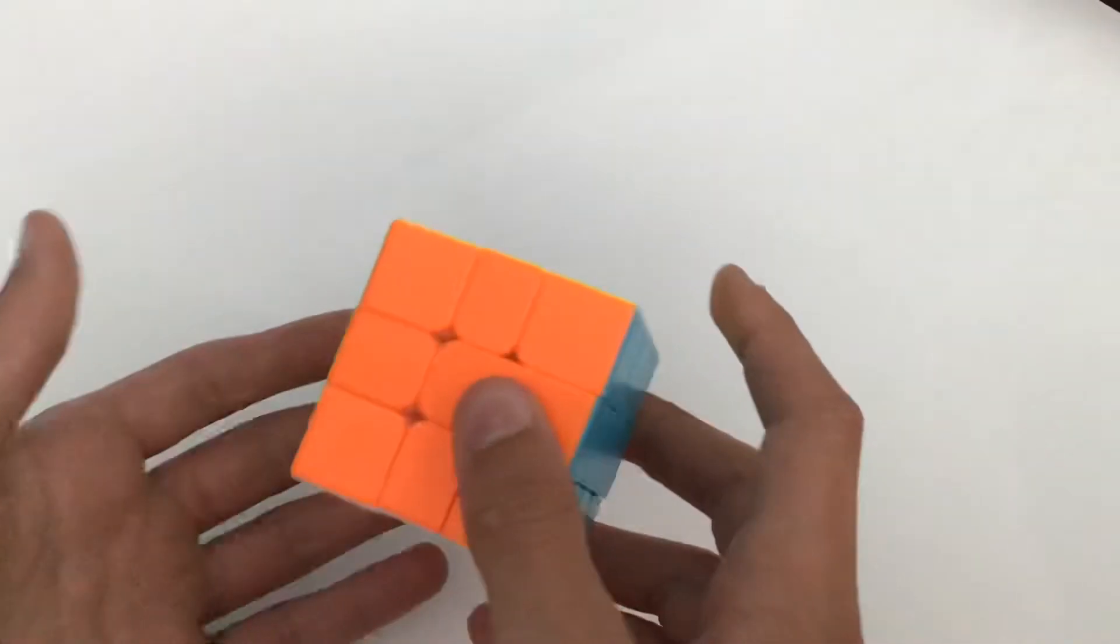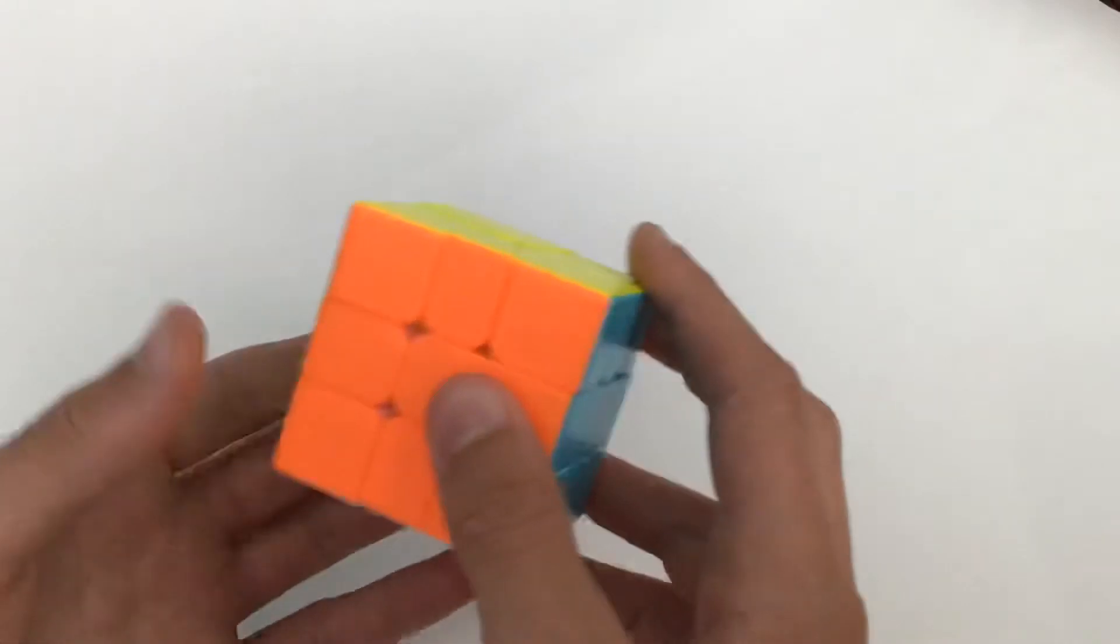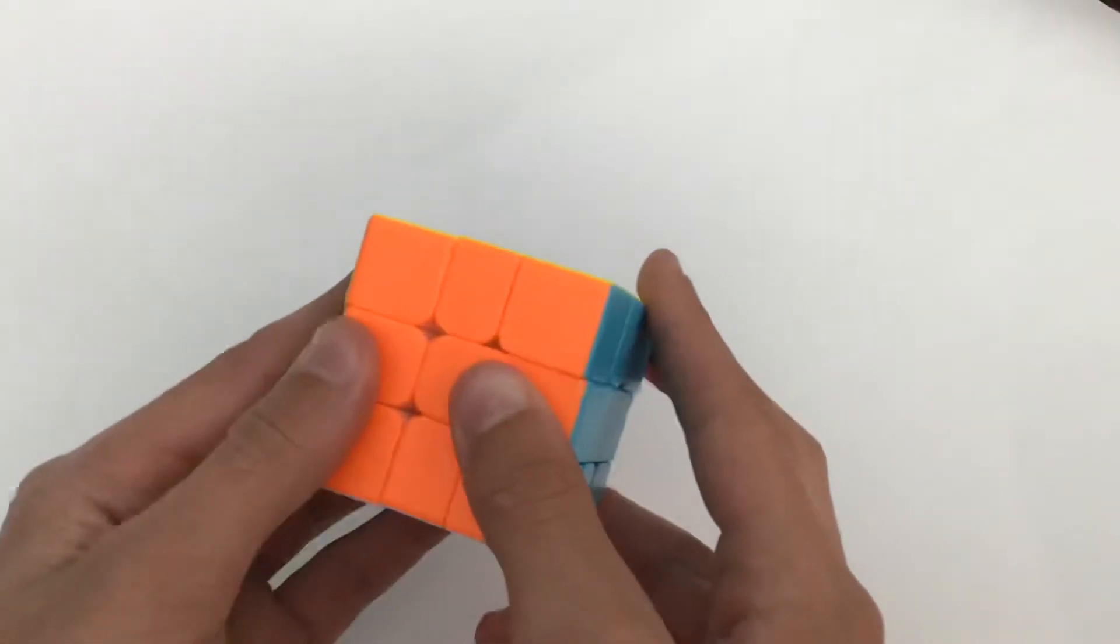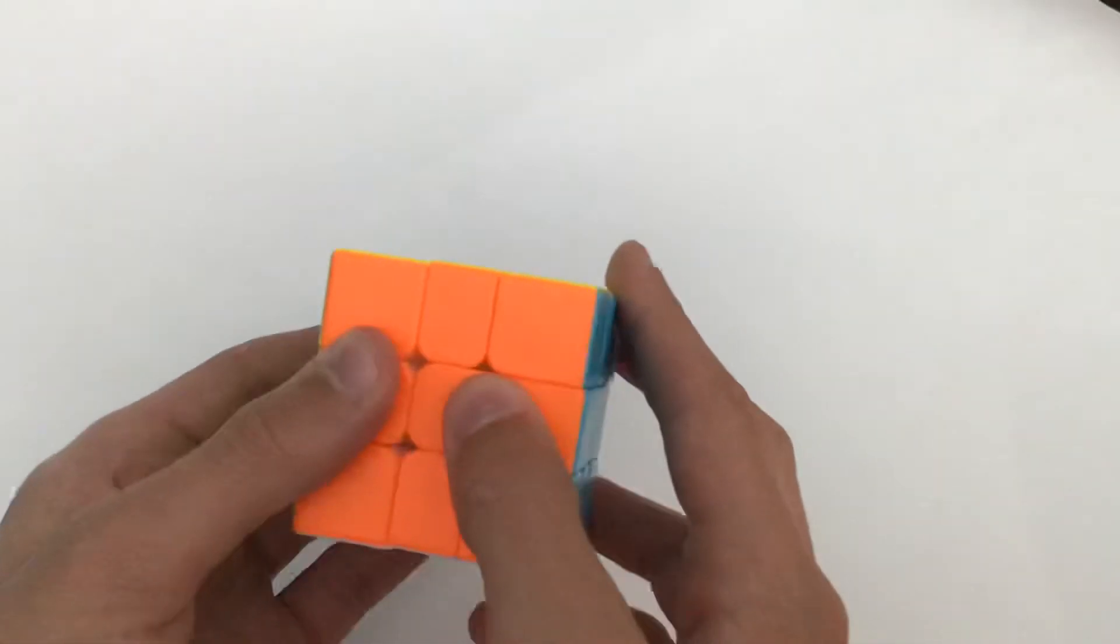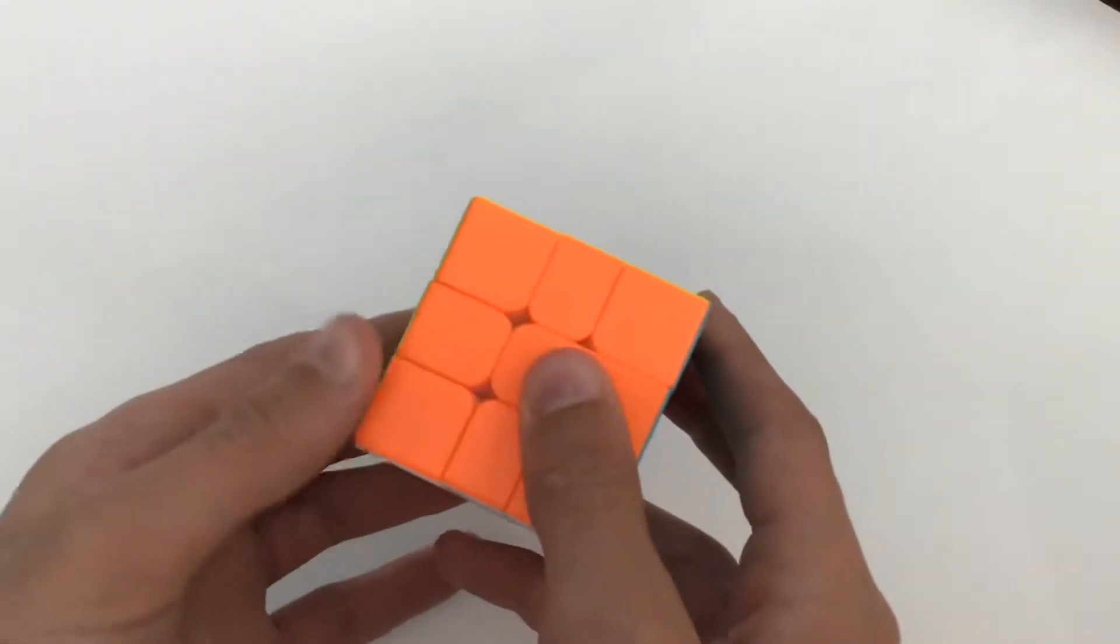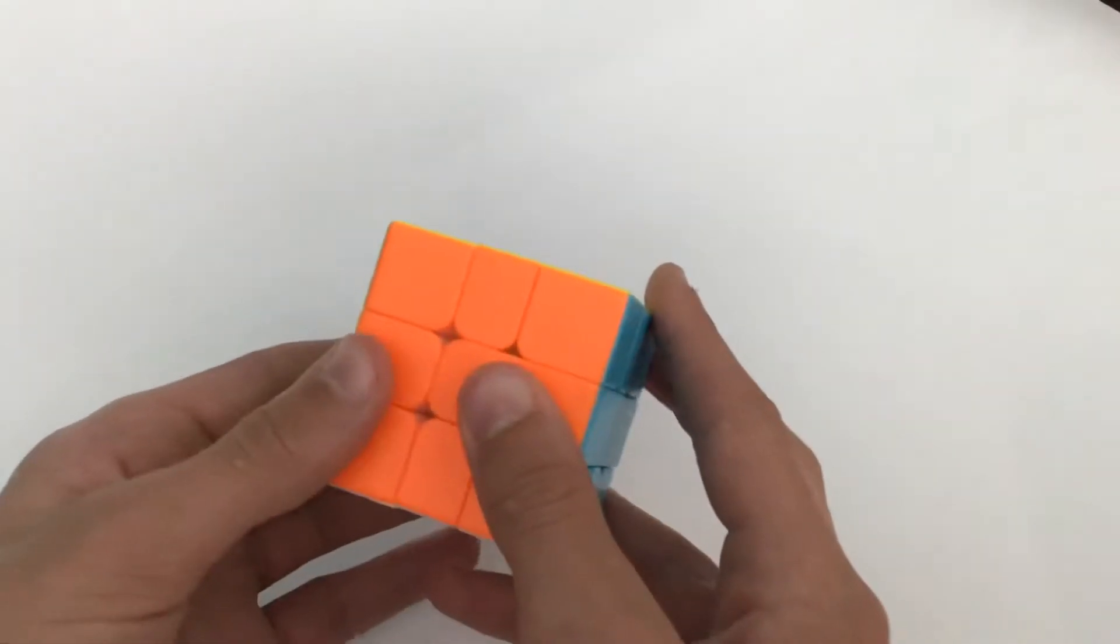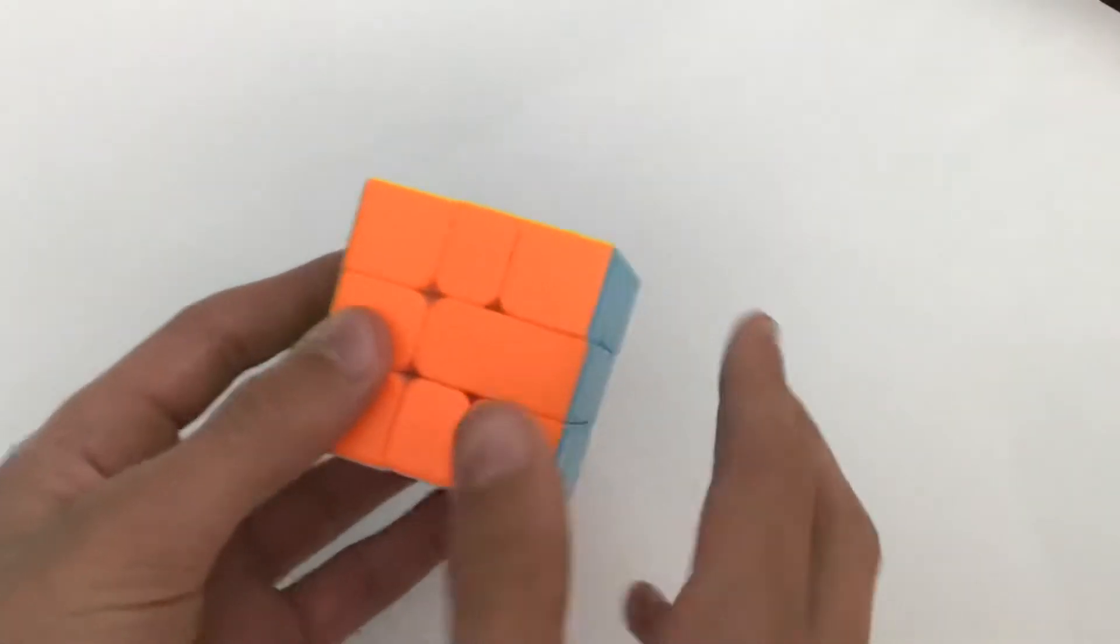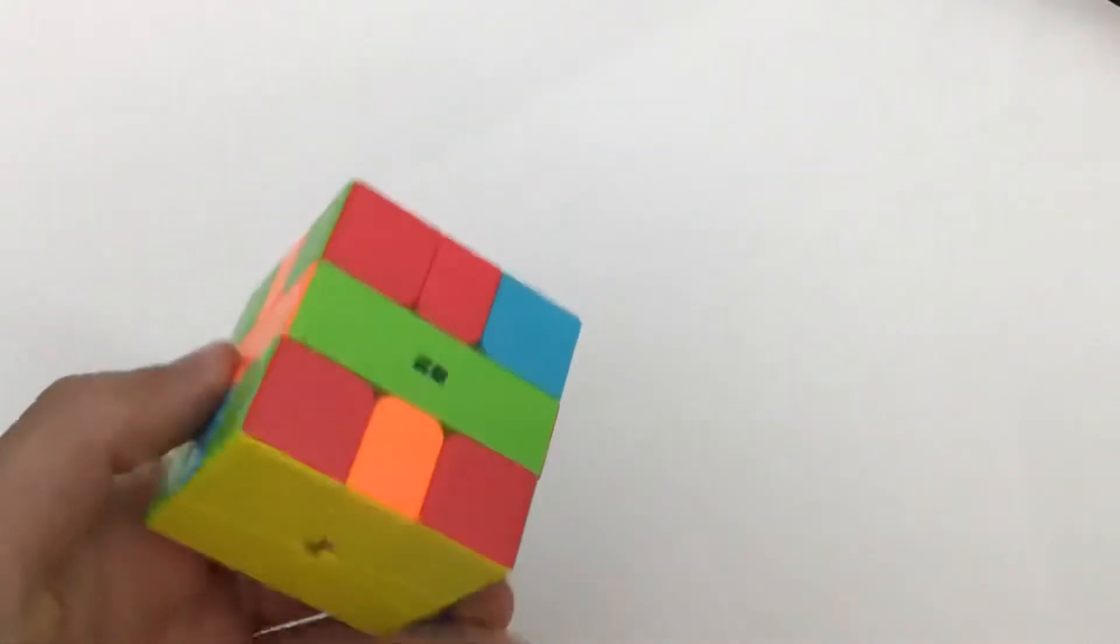But this is going to be over square one parity. Now a lot of people just stop once they see that square one has parity because the algorithm is really long. Now today I'm going to show you guys a new method to do square one parity without an algorithm and it is super easy and quick to memorize so let's hop into it.